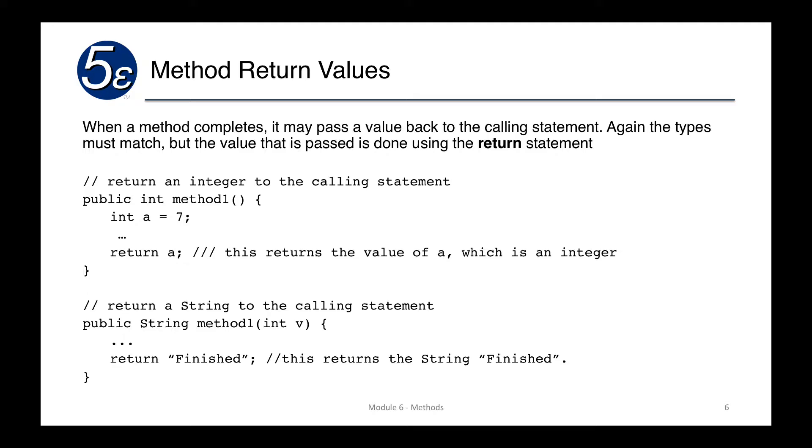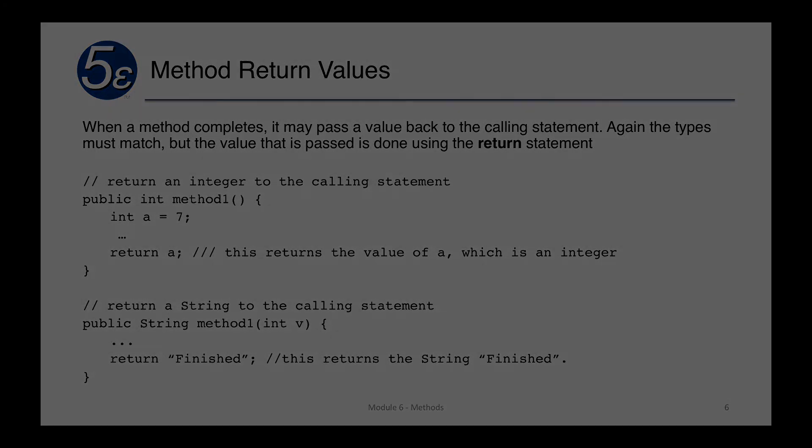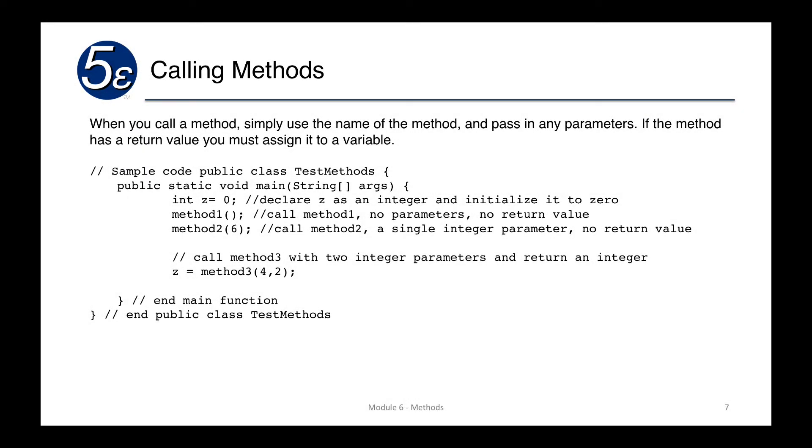In this case, I have public string. Here's my complex type. String method one. We pass in one parameter int v and I may work with that in here, inside this code, and return an actual string. Notice that the return keyword and the value after it must match the return type of the method itself.